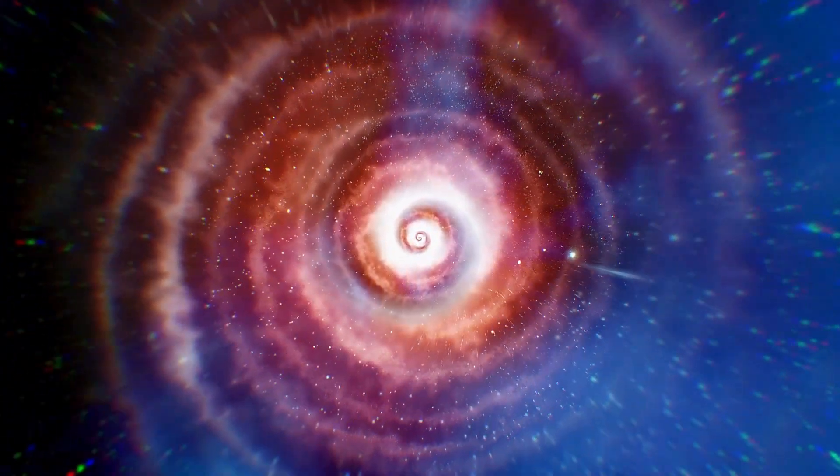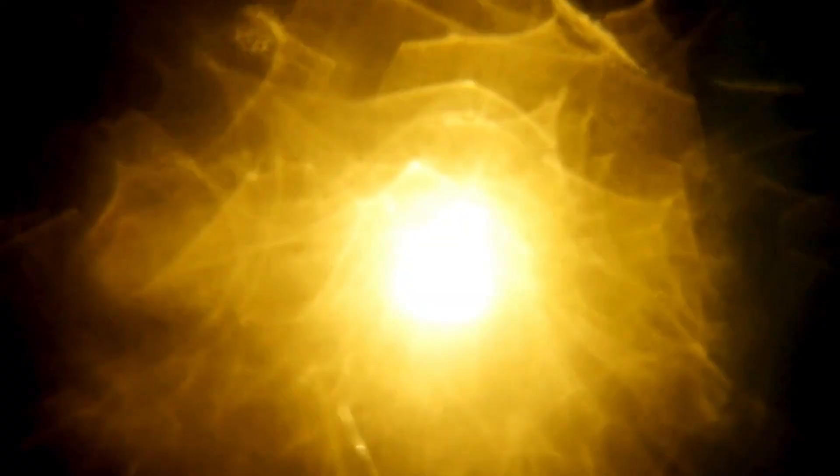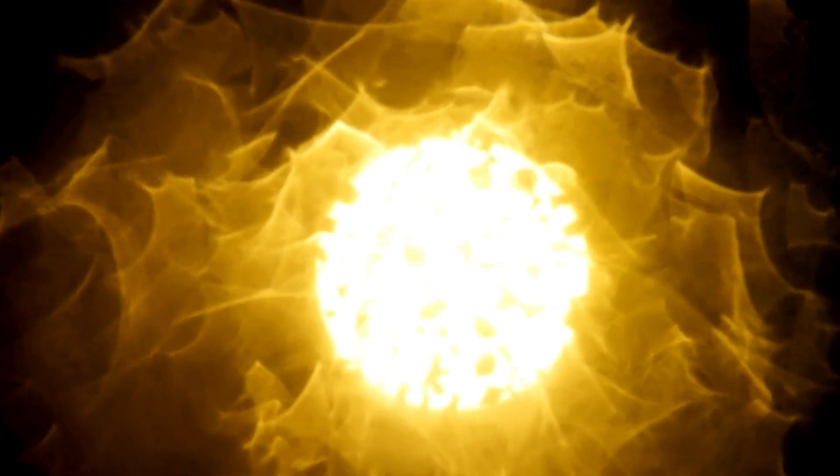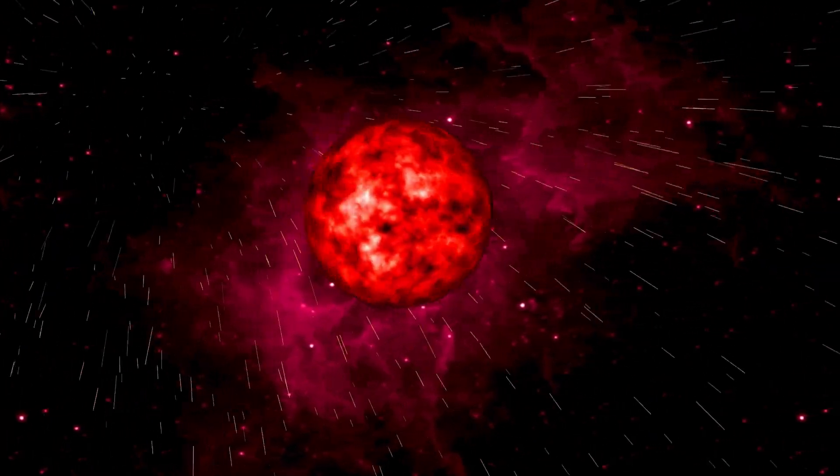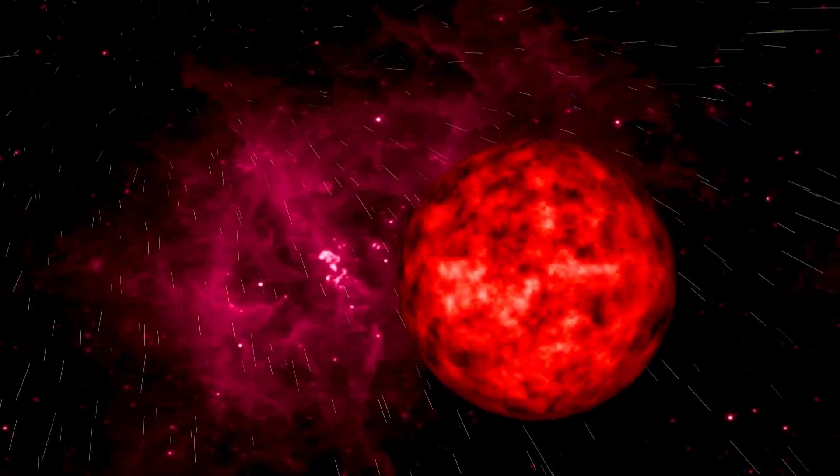These gamma ray bursts can produce long-range lethal radiation that poses a greater risk to planets like our own. The mechanism behind this involves a star nearing the end of its life being surrounded by a significant disk of material. When the supernova occurs, a shock wave is generated, striking this disk and causing it to become incredibly hot.